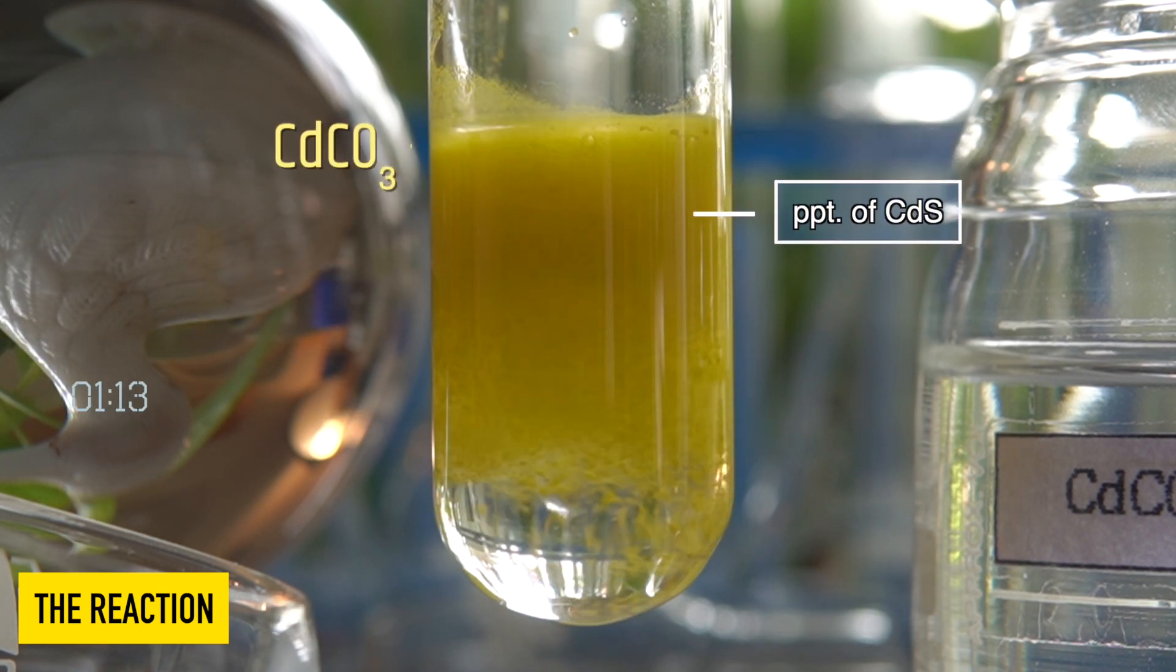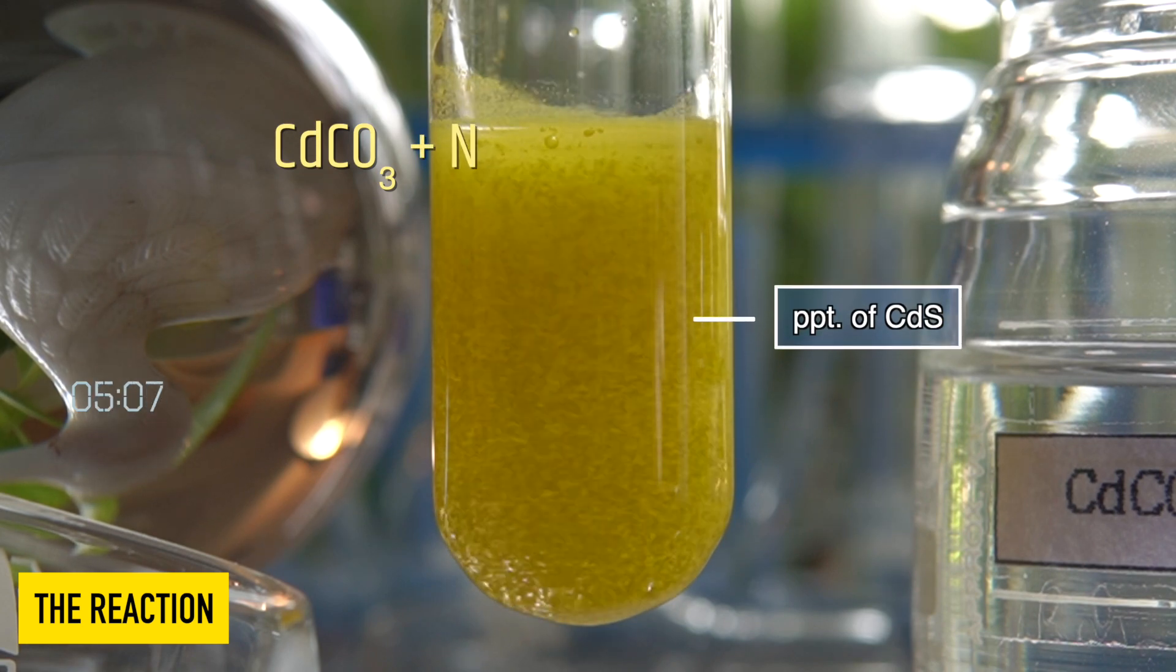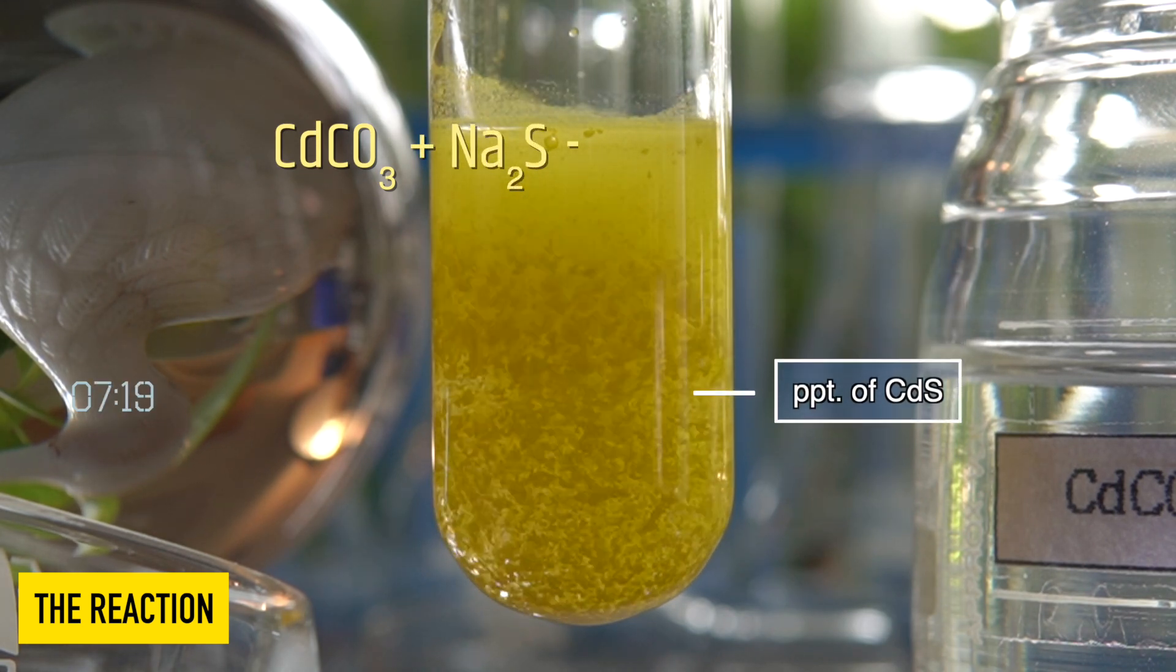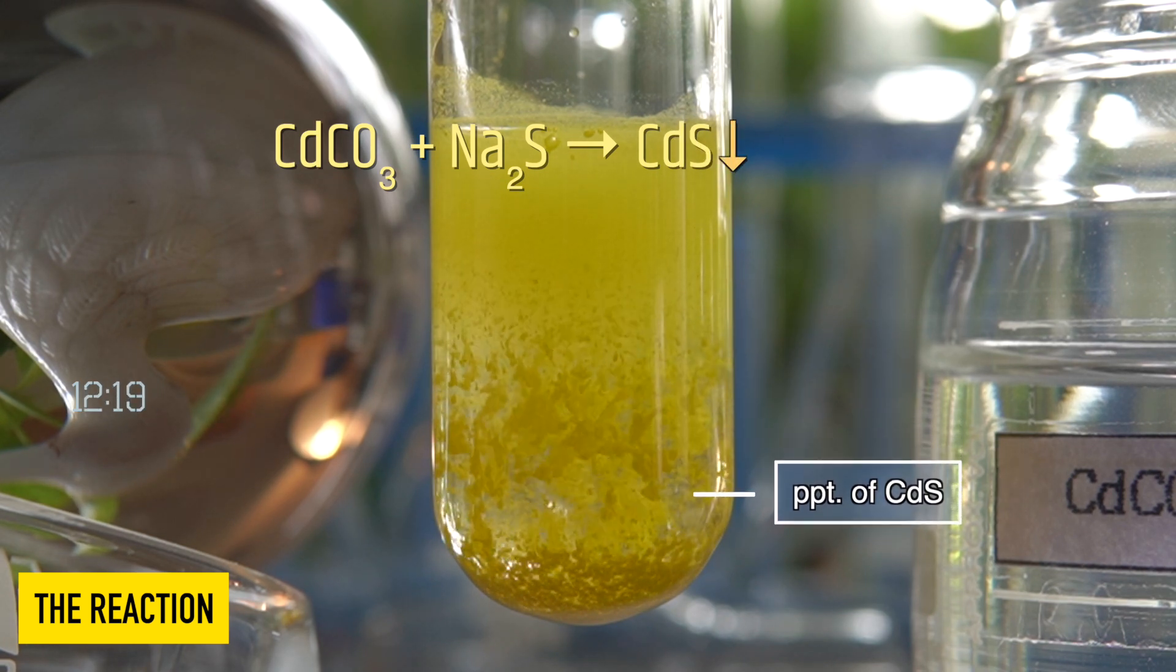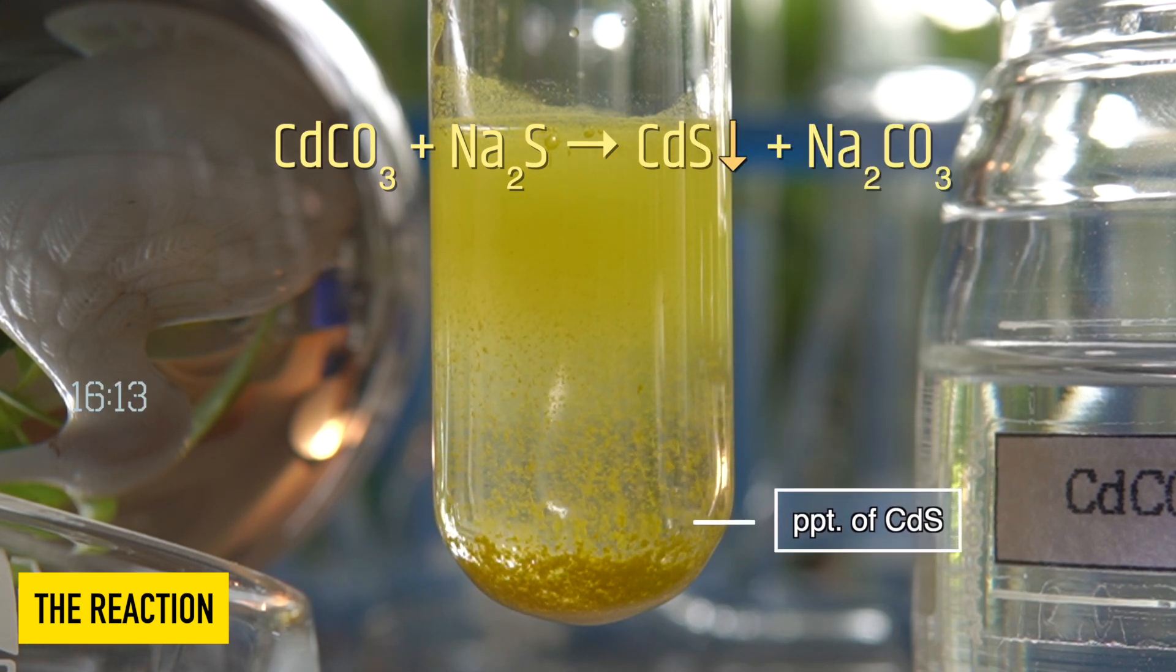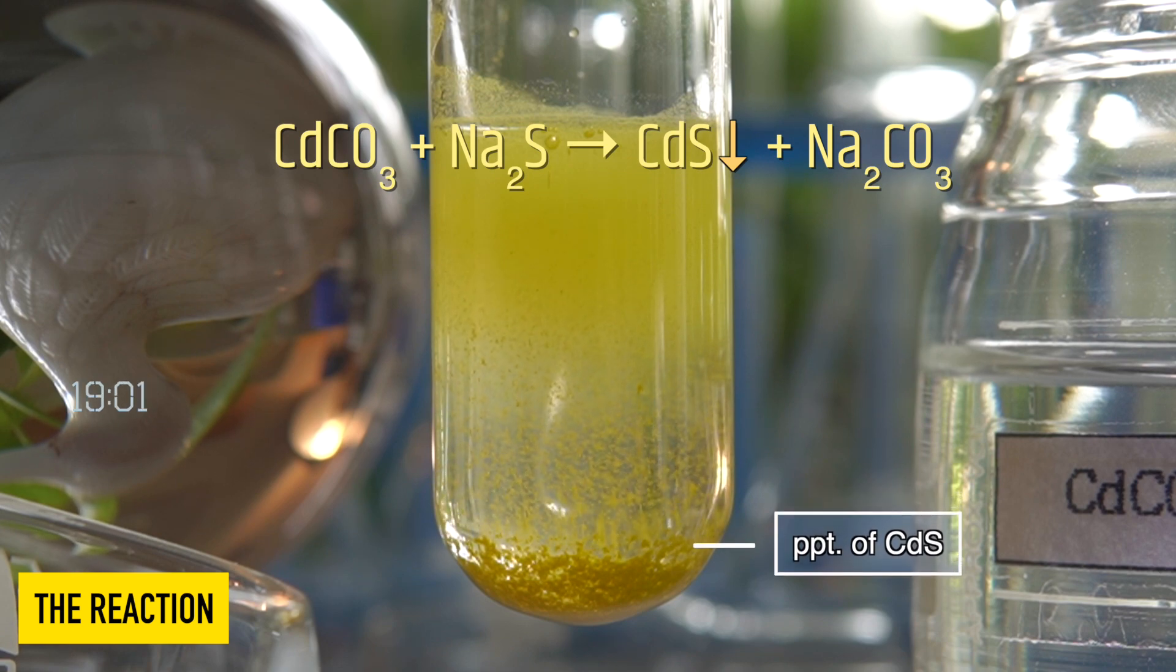So in this reaction, when cadmium carbonate reacts with sodium sulphide, it will produce an insoluble yellow precipitate of cadmium sulphide along with sodium carbonate.